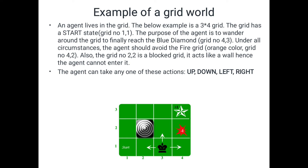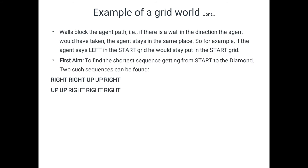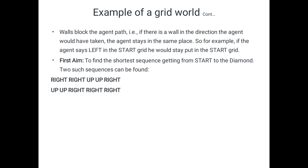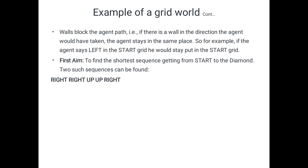The solution is the possible path from the starting location to the diamond location. Our aim is to move to the diamond. A wall blocks the agent's path — if there is a wall in the direction the agent would move, the agent stays in the same place. For example, if the agent tries to move left from the starting grid (1,1), there is no left available, so the agent stays put at the start grid.